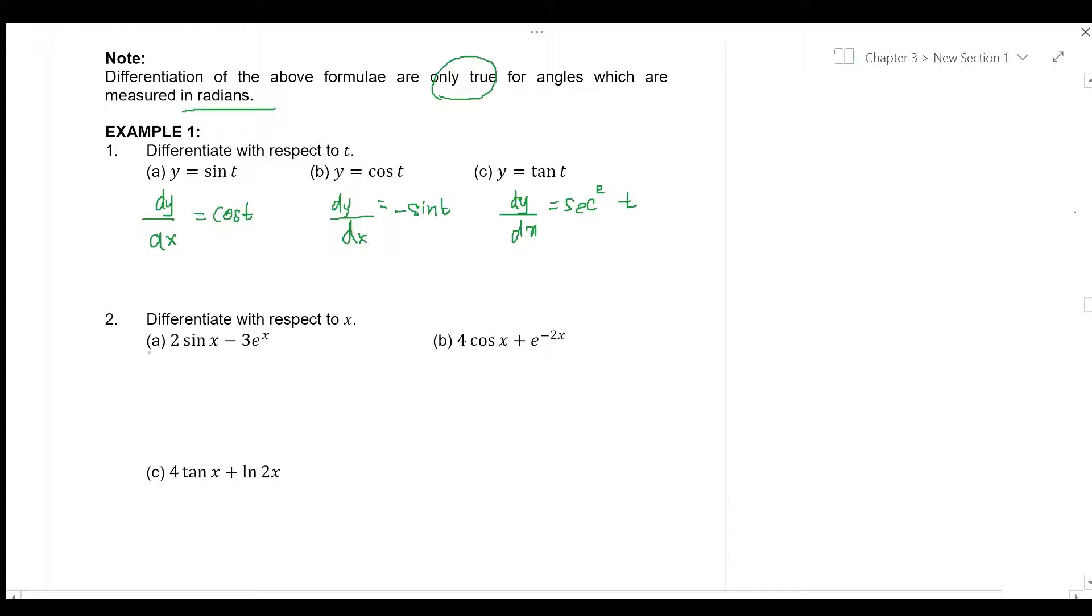Now let's look at question number 2, differentiate with respect to x, a function 2 sin x minus 3e^x. So let y equal to 2 sin x minus 3e^x. So dy/dx is equal to 2 cos x minus 3e^x.